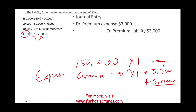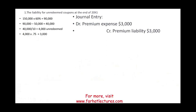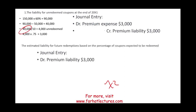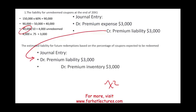Eventually in year X2, we assume customers came back and redeemed those 40,000 coupons, requiring us to give out 4,000 boxes of softener costing $3,000. At that point, we debit the liability — reducing our obligation — and credit premium inventory for $3,000.